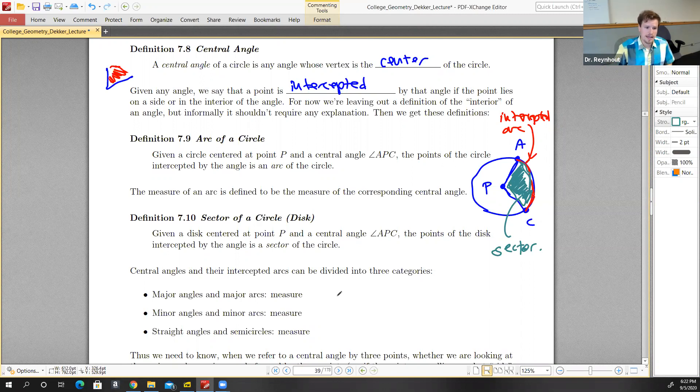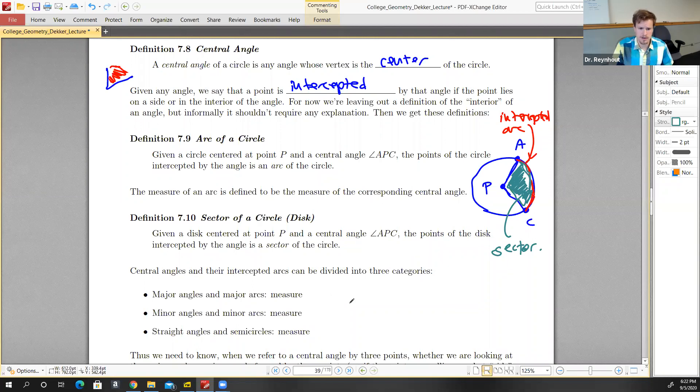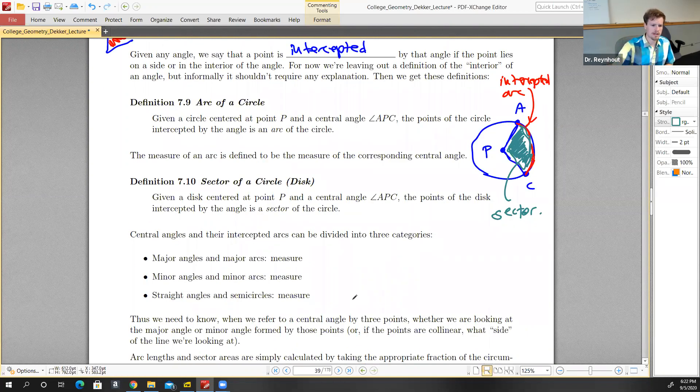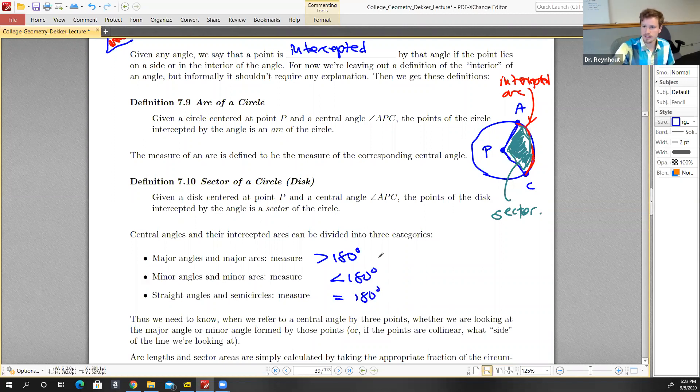Central angles and their intercepted arcs can be divided into two categories. Major angles and major arcs are those with a measure of more than 180 degrees. Minor angles and arcs have less than 180 degrees. Straight angles and semicircles are associated with an angle measure of exactly 180 degrees.